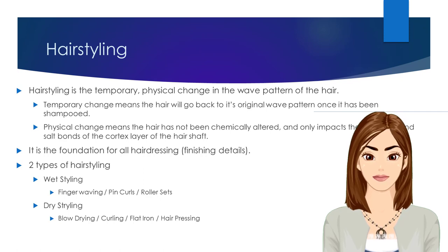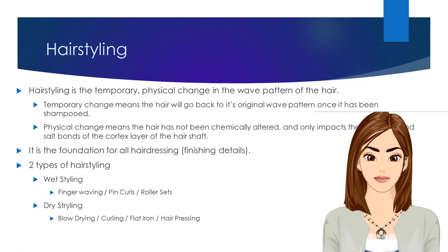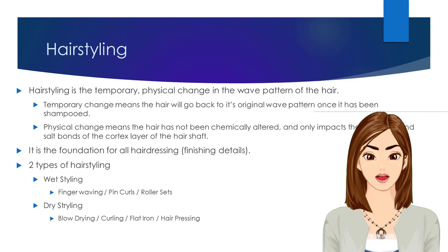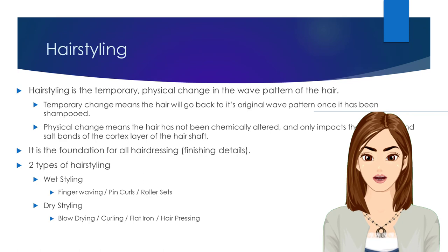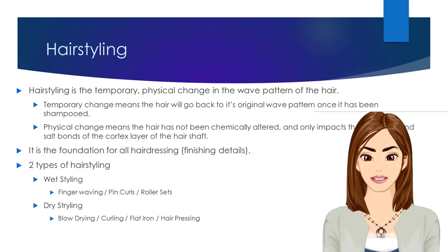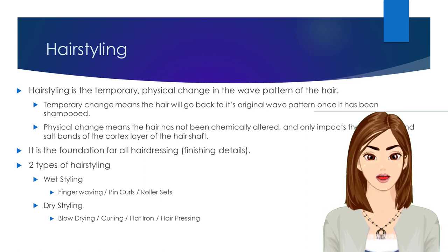There are two types of hair styling: wet and dry hair styling. Finger waving, pin curls, and roller sets are all examples of wet hair styling, as they are performed on hair that is wet and has been prepared with styling lotions or products that help to reform the hair's natural wave pattern. Blow drying, curling or flat ironing, and hair pressing are all examples of dry hair styling, and are processes that are performed on dry hair to effect change in the hair's natural wave pattern.